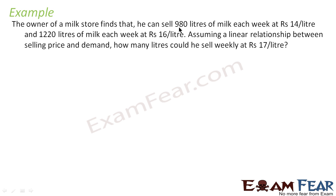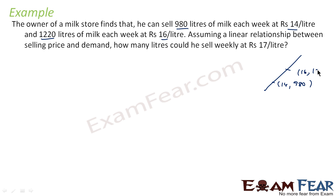The owner of a milk store finds that he can sell 980 liters of milk each week at 14 rupees per liter, and 1220 liters at 16 rupees per liter. Assuming a linear relationship between selling price and demand, how many liters can he sell weekly at 17 rupees per liter? Since the relationship is linear, we can draw a line. The linear relationship is a critical point here.